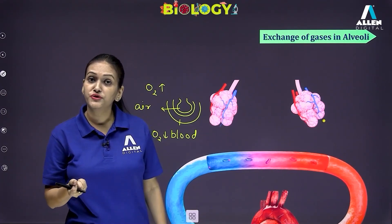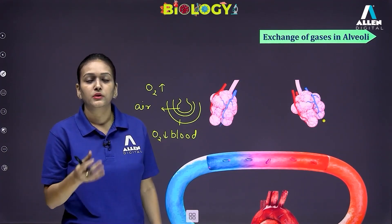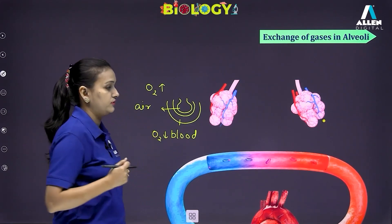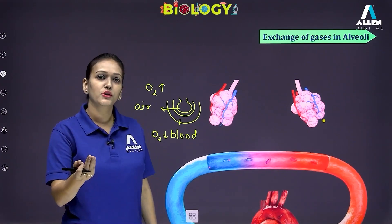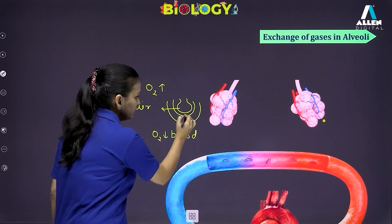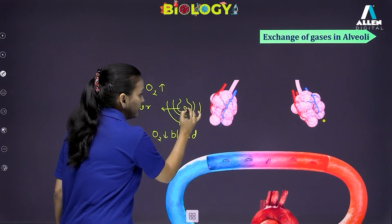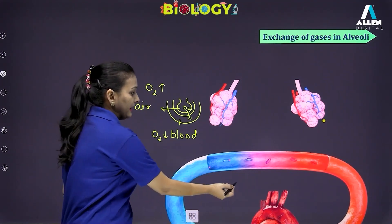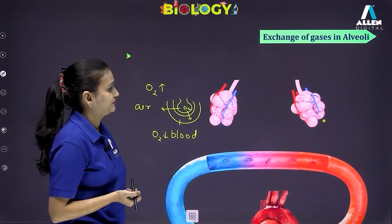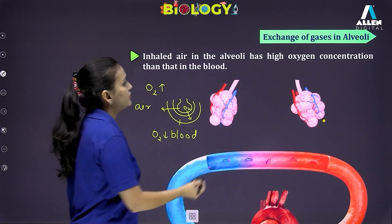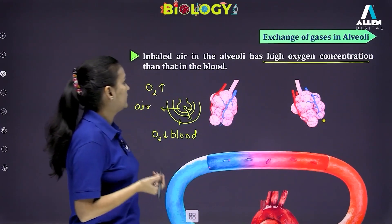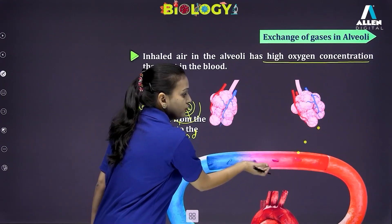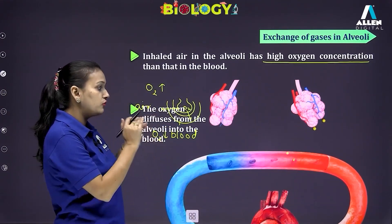The alveolar air has very good quantity of oxygen while the blood within the capillaries surrounding the alveoli has very little oxygen — low oxygen concentration. So oxygen would diffuse from the alveolar cavity into the blood. Here we can see the alveoli surrounded by blood capillaries. Inhaled air in alveoli has higher oxygen concentration than the blood, so oxygen diffuses from the alveoli into the blood.